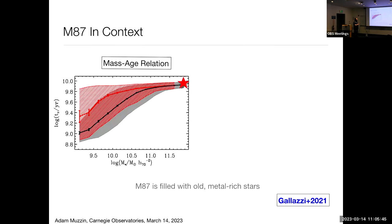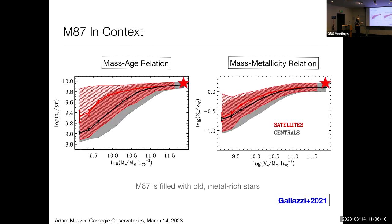Another scaling relation that galaxies in the local universe obey is the mass-age relation — age of the stellar population versus mass. More massive galaxies have older stellar populations, and M87 sits right up at the tip of the mass-age relation with a very old stellar population. There's also a mass-metallicity relation, and again M87 sits at the very tip, maybe slightly elevated relative to average, with slightly supersolar metallicity. So M87 is filled with old but very metal-rich stars.